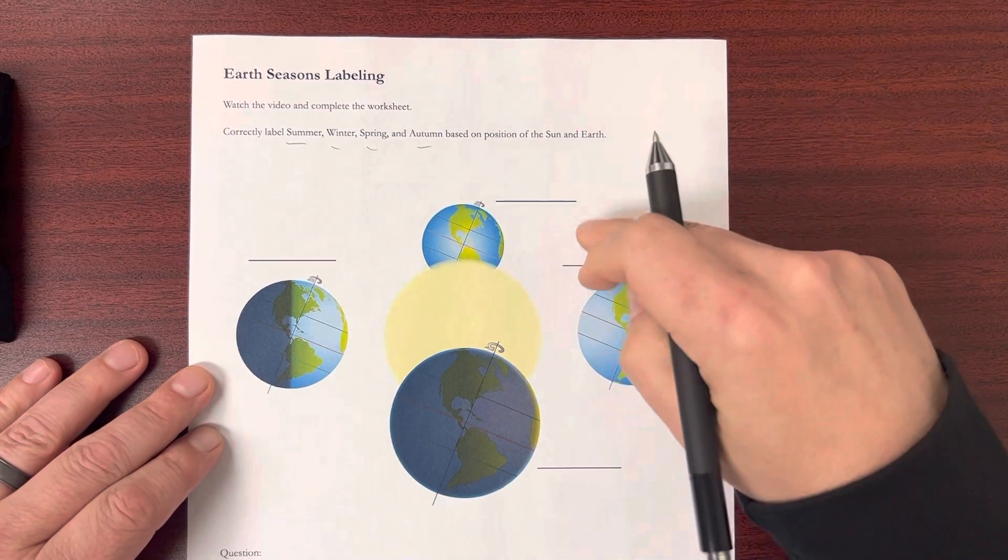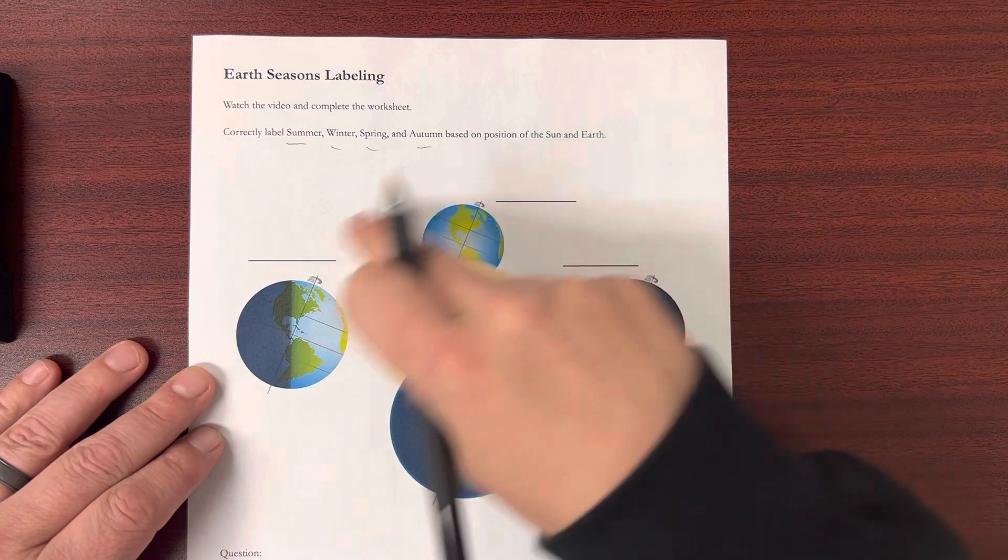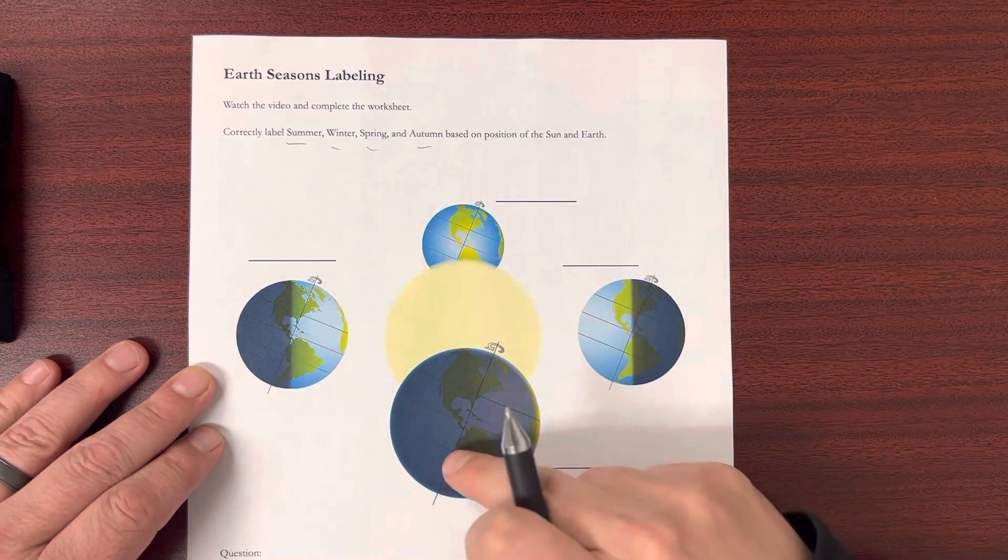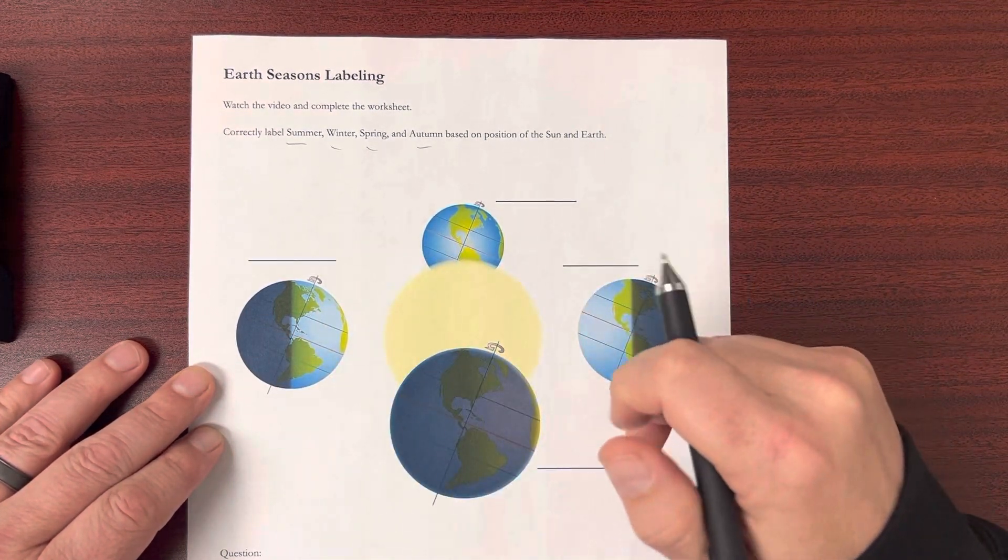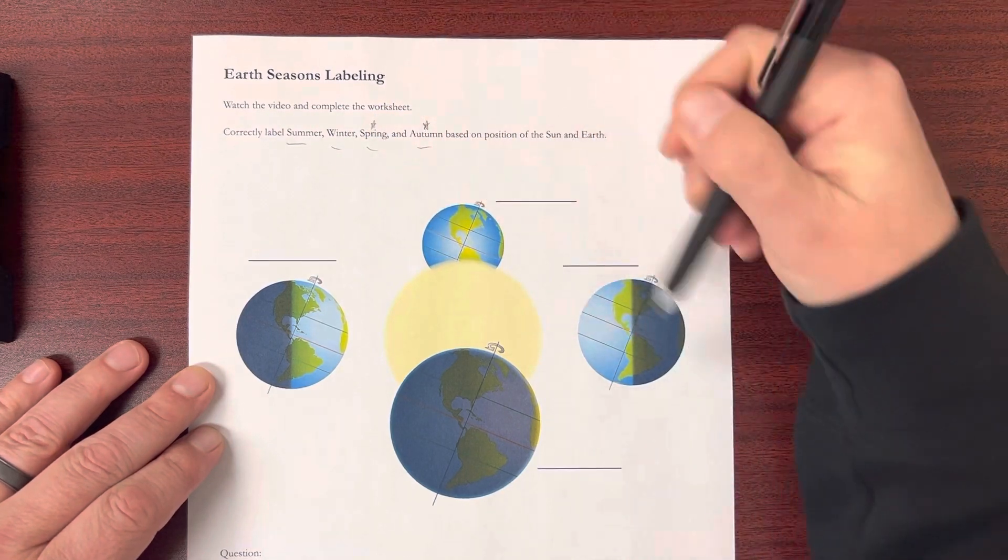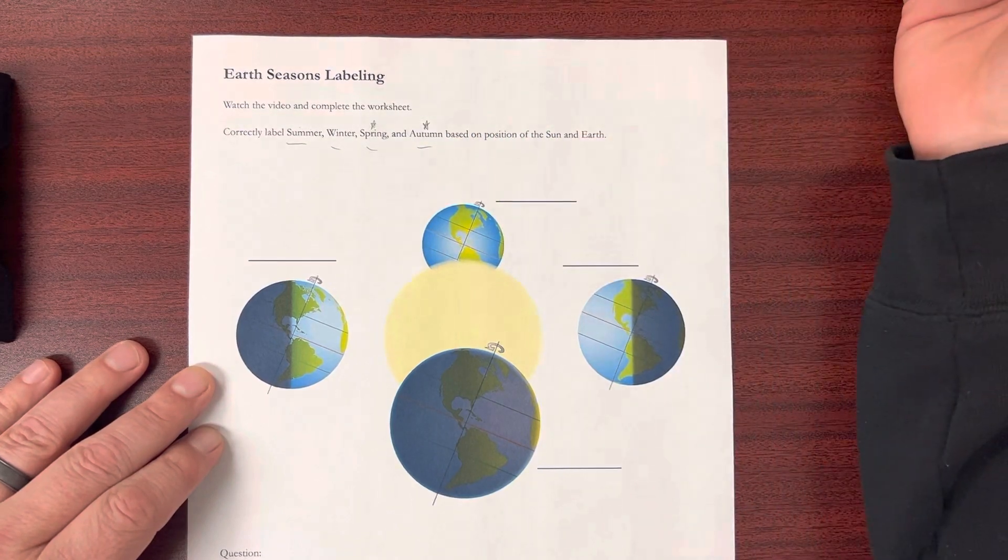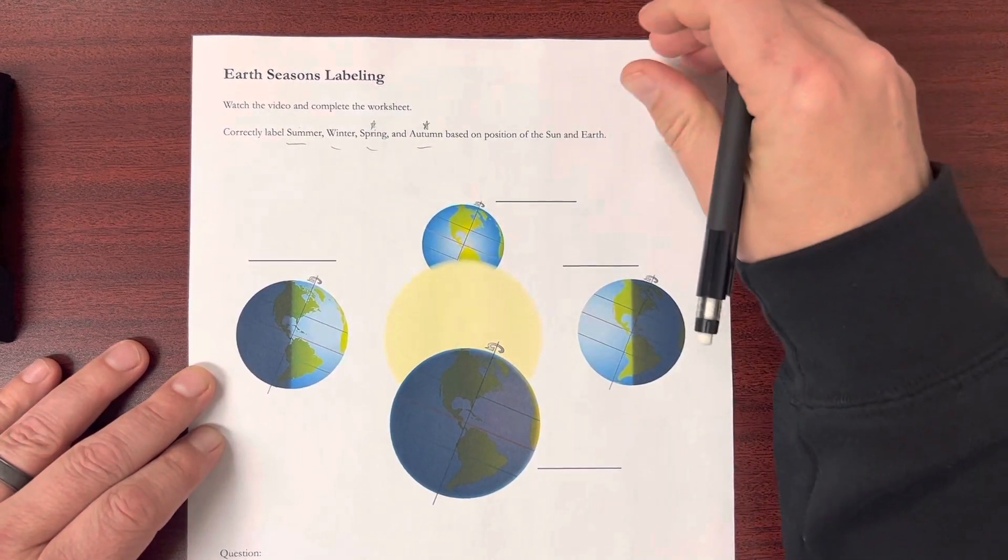Now what you need to do is you're going to have to figure out which direction the earth goes around the sun. Because that's how you're going to tell the difference between spring and autumn. There's enough information here to know what summer and winter are. This is based on our previous lecture.